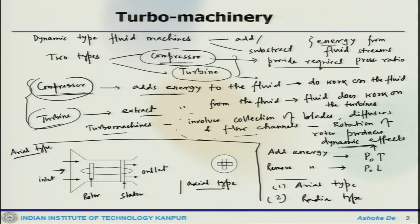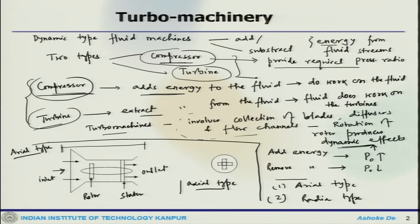In the axial type, flow comes in, passes through the collection of rotor and stator, and then goes out. Across this component the desired work is done — whether adding or extracting energy — and the fluid passes through. This is called the axial type machine.